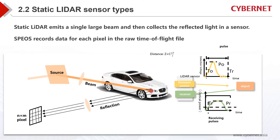Next, I will introduce the static LiDAR. From the schematic, we can see there will be a radar on the right side of a car which emits a single beam and then collects the reflected light in a sensor. This is a complete path and the radar here does not need to rotate, so this is considered a static state. Engineers can simulate the distance based on the time taken from transmit to receive according to the speed of light principle. Currently, SPEOS can use this mode to get a depth map representing distance, and I will show more examples of the depth map in the coming slides.